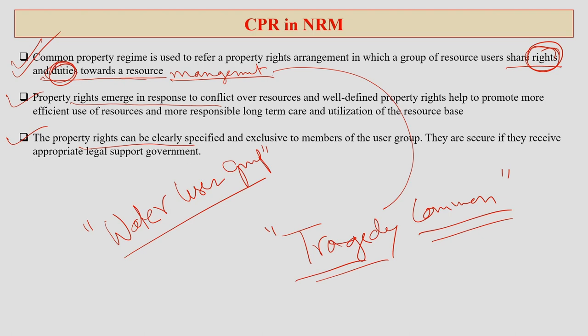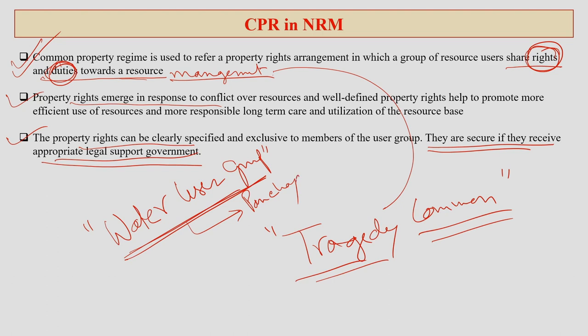Property rights can be clearly specified and exclusive to the members of the user group, and they are secure if they receive appropriate legal support from the government. If you form a water user group, your local panchayat — the bottom-level administrative and political institution — will have a responsibility to give certain powers to that water user group to maintain and manage a particular water resource such as the pond.